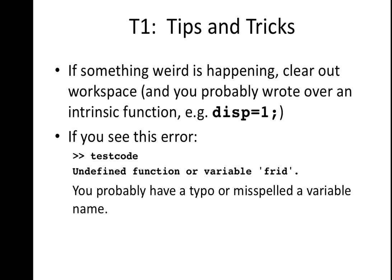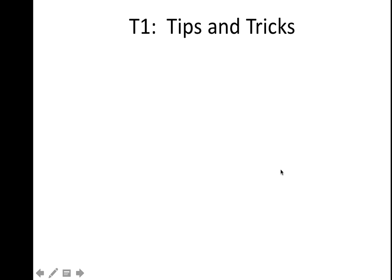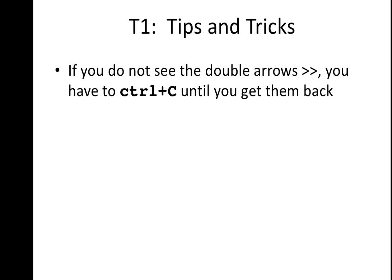The other one, and this is a really easy one to find, is anytime it says undefined function or variable, something usually tells you what it was. So I'm running a code called test code, and my error message says undefined function or variable f-r-i-d, probably misspelled this, either by whatever you originally defined that variable, or whatever intrinsic function. But this is a very common error, and it's a very easy one to read, because it tells you which variable it doesn't recognize. So you need to go back and look at what's inconsistent about that.